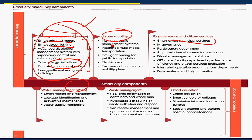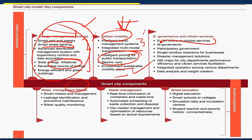In urban mobility, smart cities have Intelligent Traffic Management Systems (ITMS) and integrated multimodal transportation systems such as metro rails, monorails, and better public transportation through BRTS. There is also intelligent pricing for public transportation to prevent excess pricing, electric cars, and environmentally sustainable mobility plans. These are the smart solutions for urban mobility.